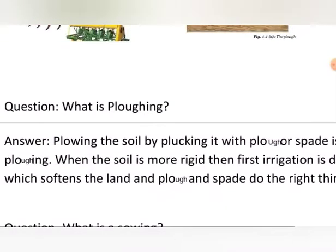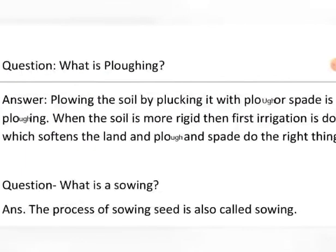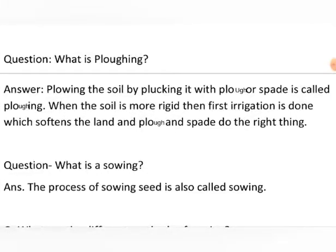Next question: what is plowing? Plowing the soil by turning it with the plow or spade is called plowing. You take a plow and reverse the soil — the part of the soil which is above is turned over. Sometimes the soil is rigid, so irrigation is done first. With irrigation, the soil is softened and then the plow and spade work properly.